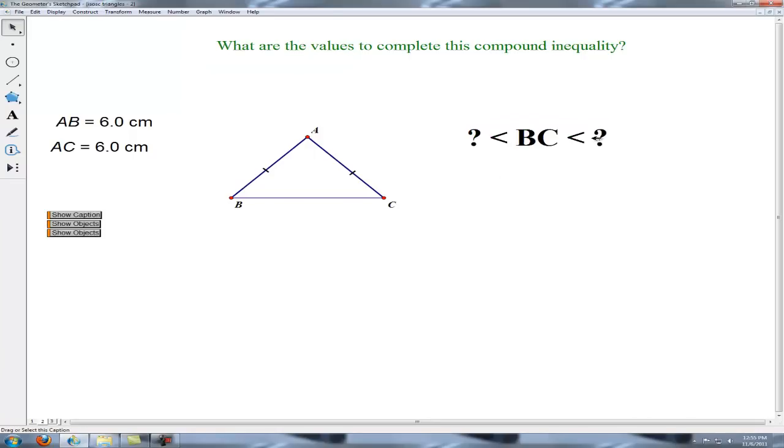BC has to be less than something, and we just demonstrated, and hopefully you have some intuition behind the fact that 6 plus 6 is 12. That's our segment addition postulate, and BC becomes exactly 12 when we have those points collinear, A, B, and C.